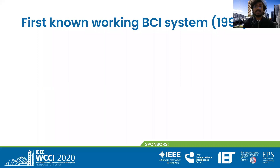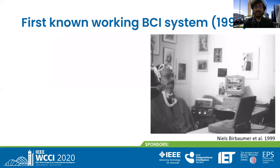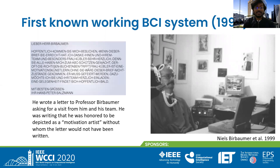About 15 years later, in 1990, one of the first practical systems was demonstrated by Neil Burmauer. He demonstrated that a user with implanted EEG was able to communicate — able to type using his brain. Using this typing technique, he was able to write a letter to Professor Burmauer requesting a visit from him and his team. That was a very exciting time, and this was around 1999, which was still very early.